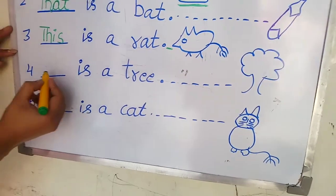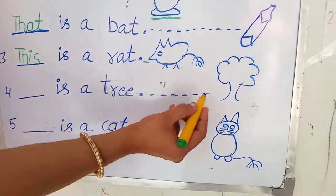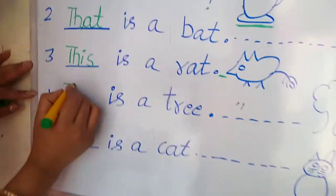Now the next is dash is a tree. Tree is so far away, so write down that. That.